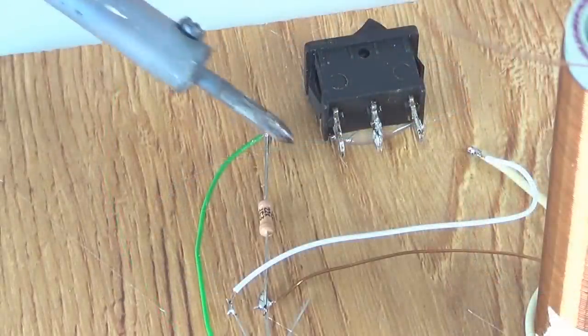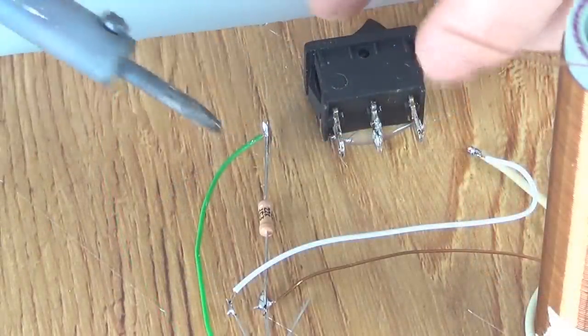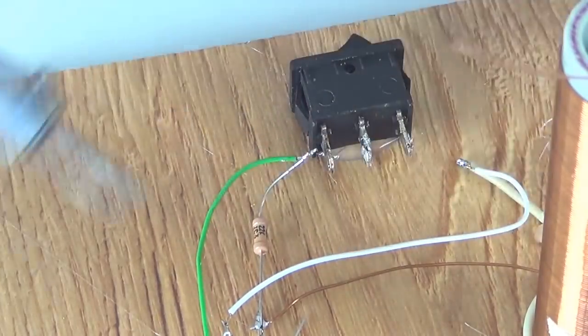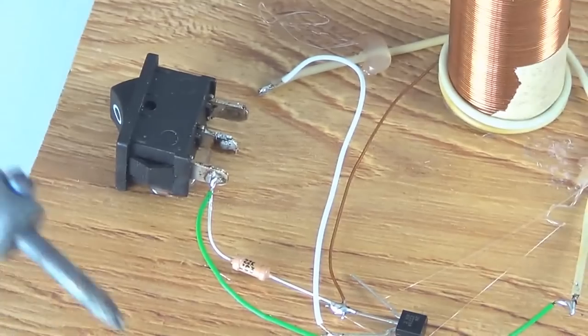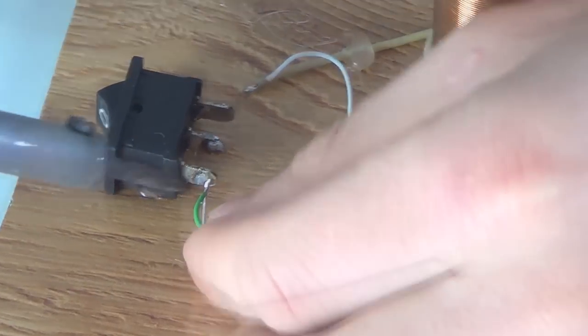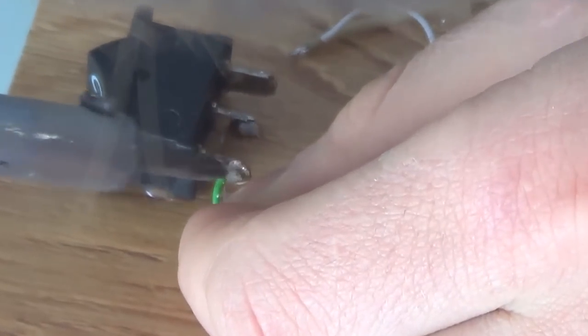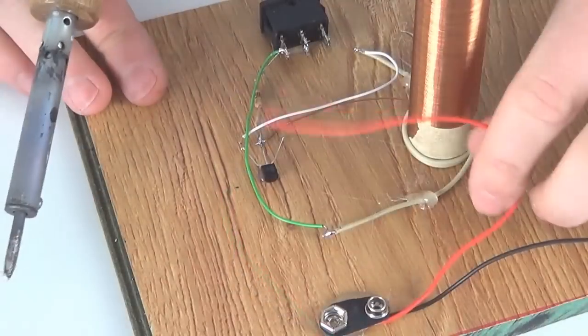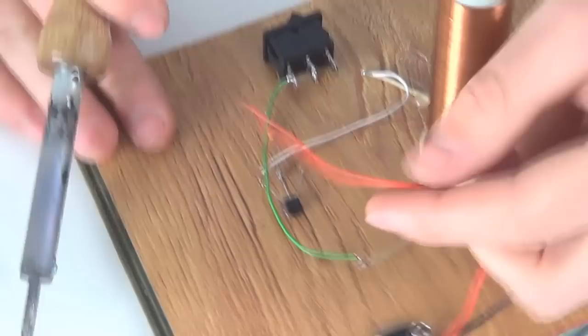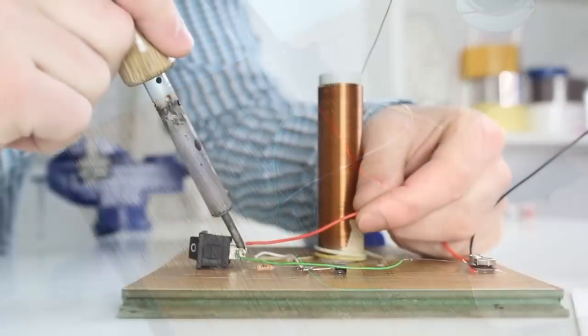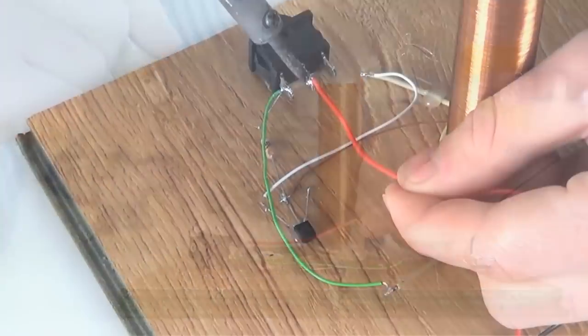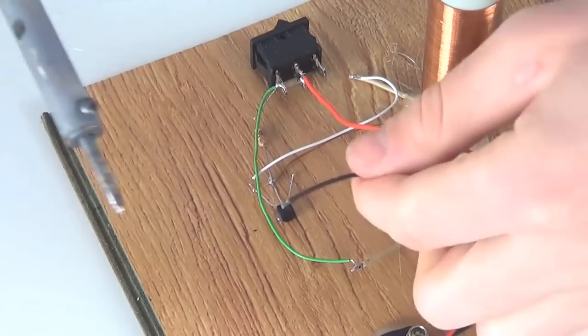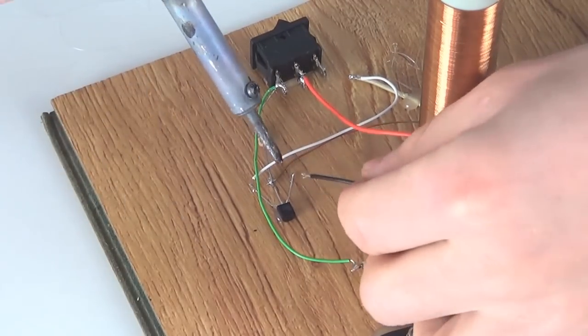Then connect the resistor and the wire of the secondary spool to the switch. Solder the red wire of the 9V battery, which is a plus, to the middle of the switch. The black minus wire we solder to the left contact of the transistor.